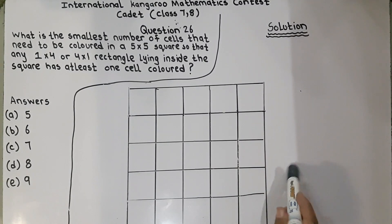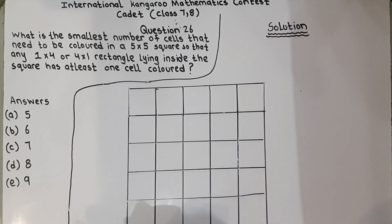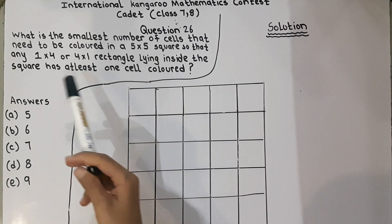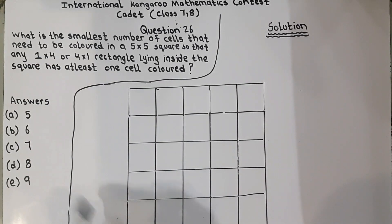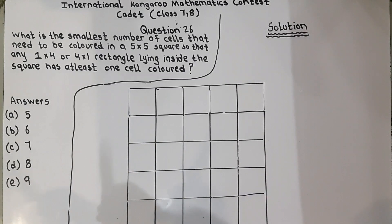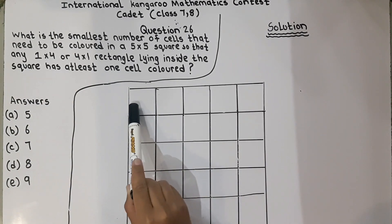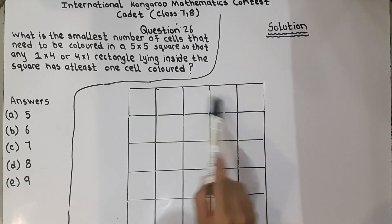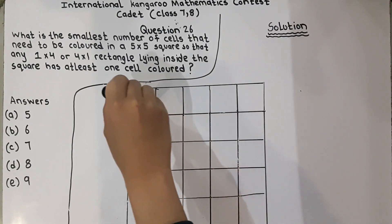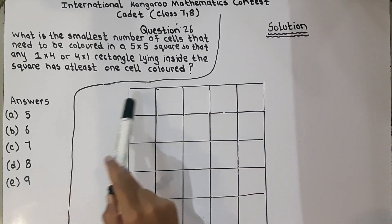So this is the 5x5 square — 5 boxes across and 5 boxes down. They are asking what is the smallest number of cells that need to be colored, whether it's 5, 6, 7, 8, or 9, so that any 1x4 rectangle like this going horizontally, or 4x1 going vertically, lying inside the square has at least 1 cell colored.